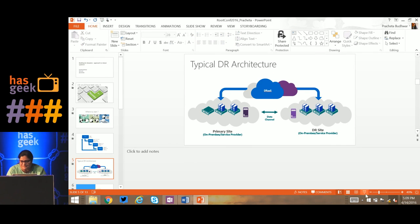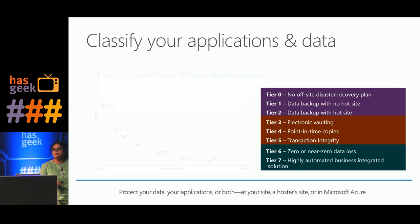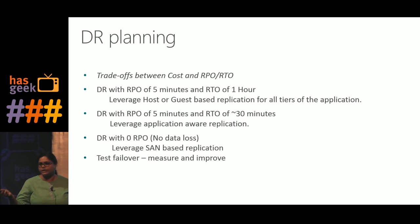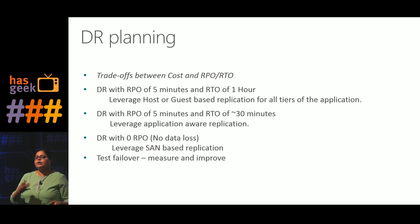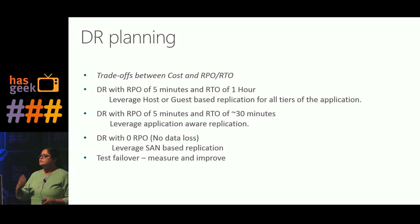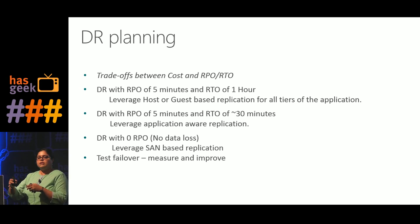Does everyone understand RTO and RPO? RTO stands for Recovery Time Objective and RPO stands for Recovery Point Objective. RPO is how much data loss you can tolerate — it can be 5 minutes for some organizations, 30 minutes, or 0 minutes. RTO is how long it will take for your DR to come up when disaster strikes — it may be 20 minutes, 30 minutes, or 4 hours. Define your RTO and RPO, and it is a good idea to have different RTO and RPO for different sets of applications based on their criticality.